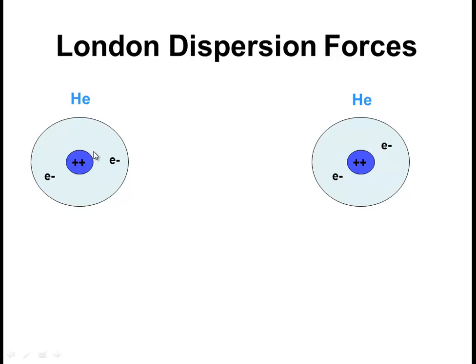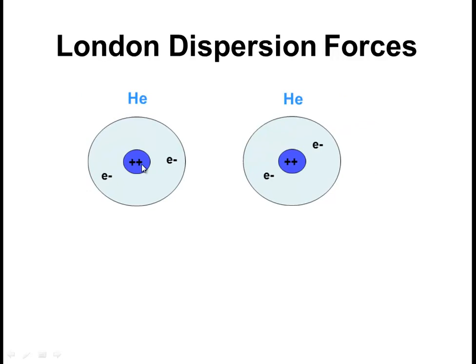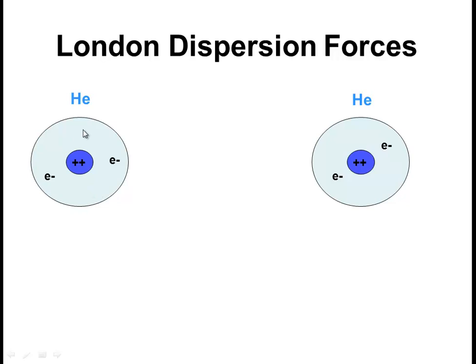Perhaps the simplest example of the London dispersion force interaction is between two atoms of helium. So here I've got, I'm trying to depict in a very cartoonish way, two atoms of helium. Here's the nucleus with a positive two charge because of the two protons, and let's represent the electrons with the little letters. When they're apart, when they are relatively isolated, these two electrons in the 1s orbital are evenly distributed in three-dimensional space around this sphere. The electrons on helium are spherically symmetric about the nucleus. It's just like a little ball.